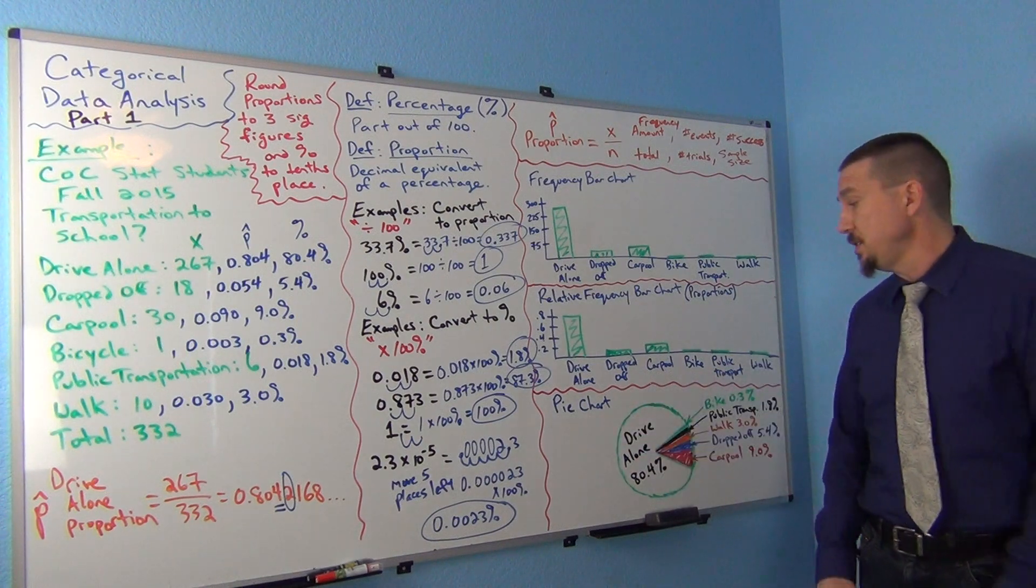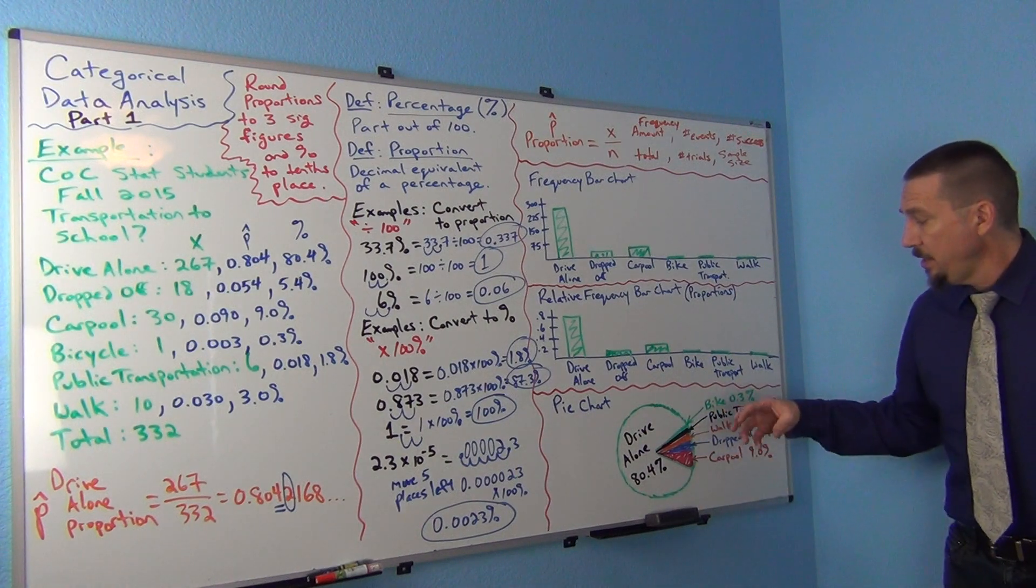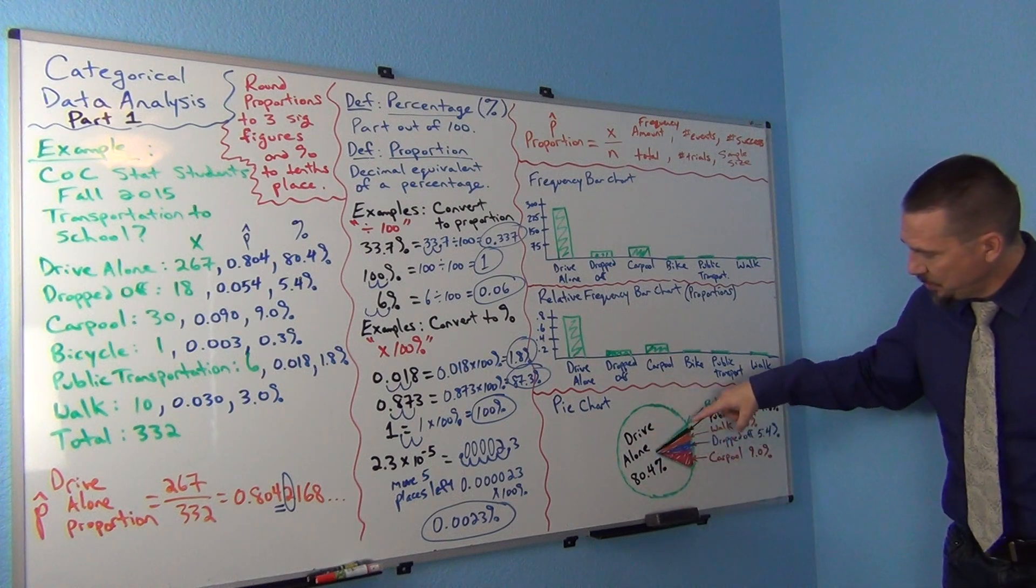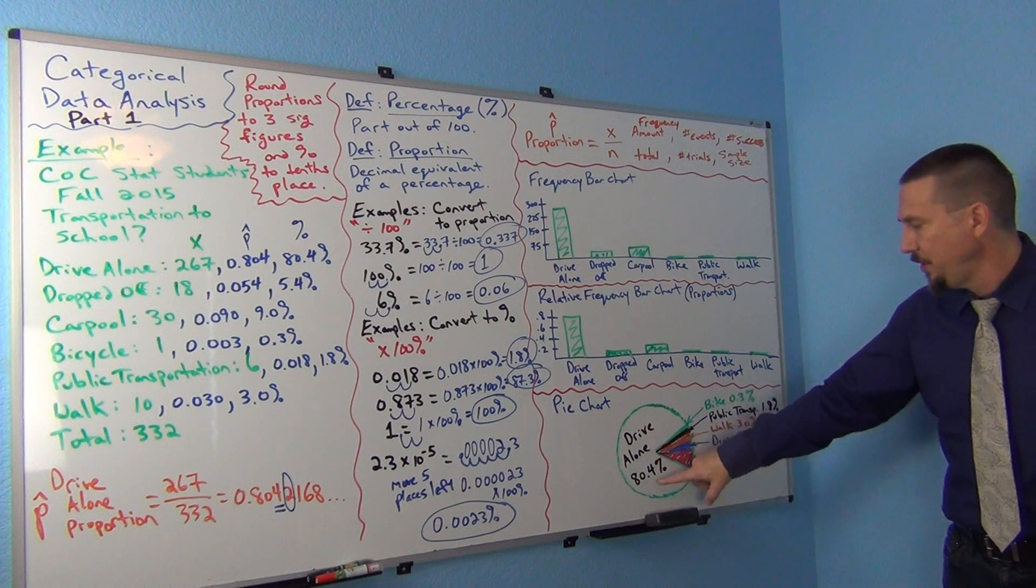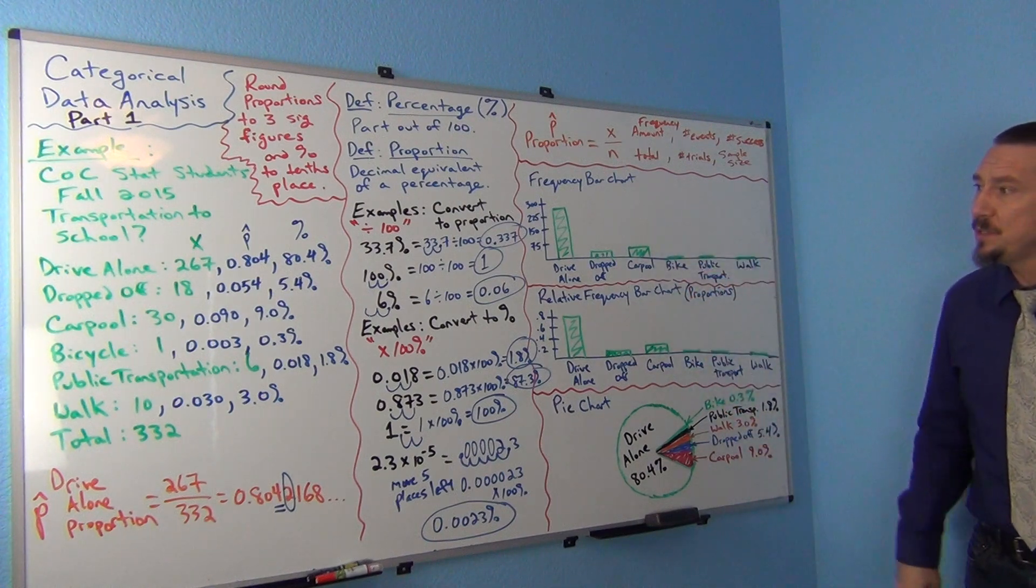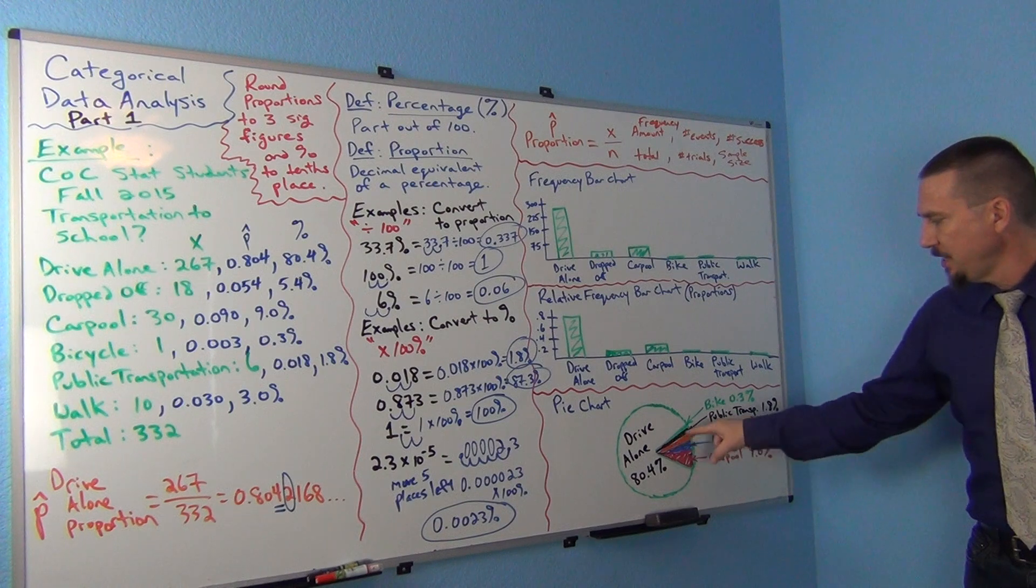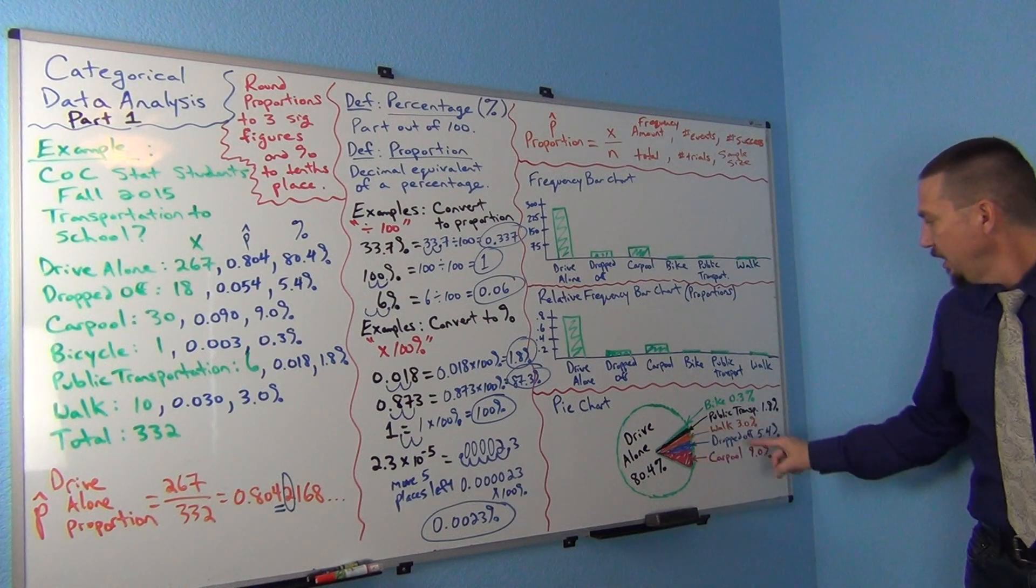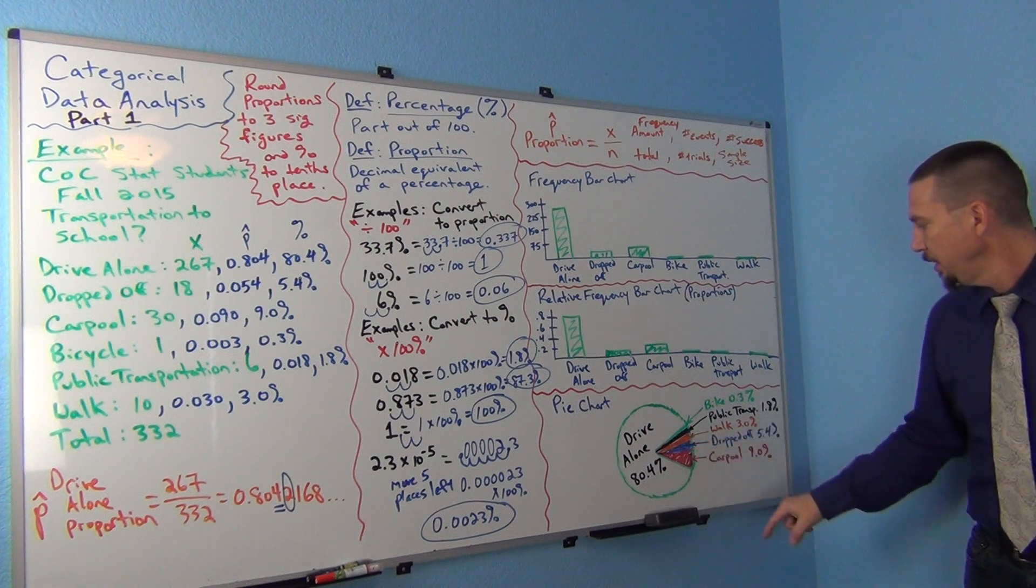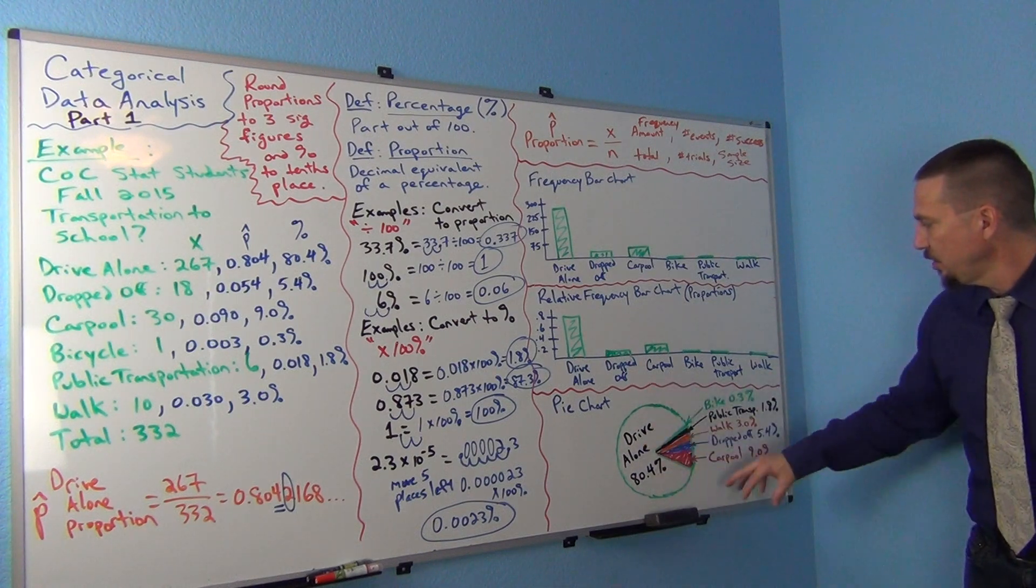A third kind of graph that you sometimes see is the pie chart, which is very famous. It kind of looks like a piece of a pie. And basically it calculates usually the percentages. It's usually a percentage for each of your categorical variables. So 80% of the pie, which is most of the pie here, was drive alone. So you'll see it says drive alone and 80.4%. And then these little ones, they kind of broke up into pieces. So the biking was 0.3%. So that's this little green sliver right here. Public transportation was 1.8%. This little dark black sliver right here. Walking was this orange little piece. So that was 3%. Dropped off was 5.4%. That's this blue one right here. Carpooling was 9%. That's this red piece of the pie right here.